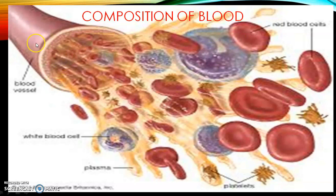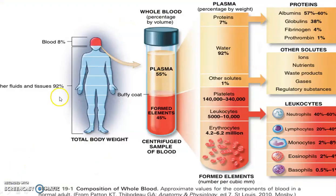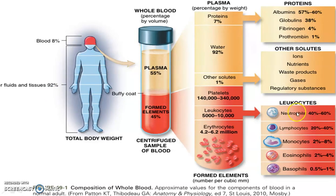In this diagram you can see the blood vessel with all the components of blood — red blood cells, white blood cells, platelets, and plasma — all flowing inside the blood vessels. The body consists of about 8% blood, while other fluids and tissues comprise about 92% of total body weight.